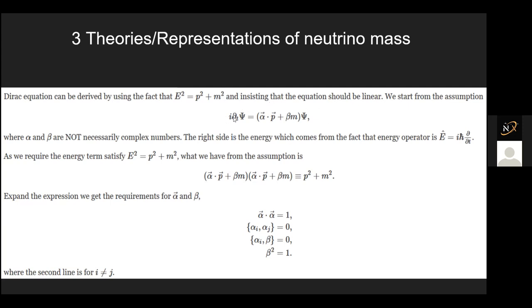The reason you want to get it in this term is this is basically the Schrödinger equation. This momentum gives you the kinetic energy part and the mass gives you the scalar potential part. So this would be the total energy — the Hamiltonian of the system. Here alpha and beta are what we solve for.